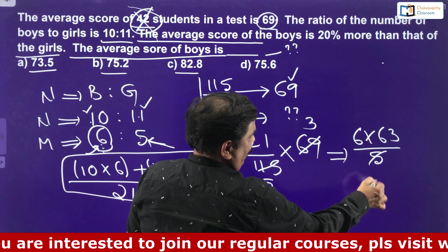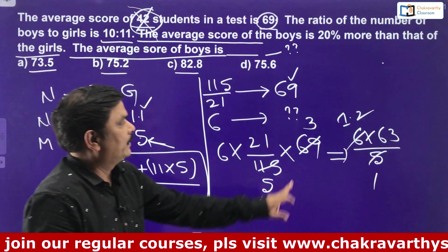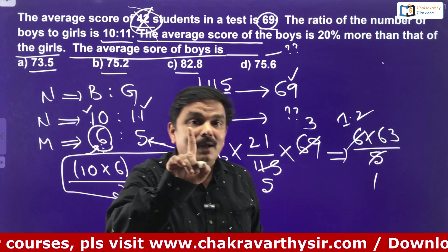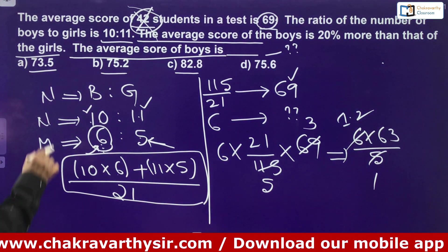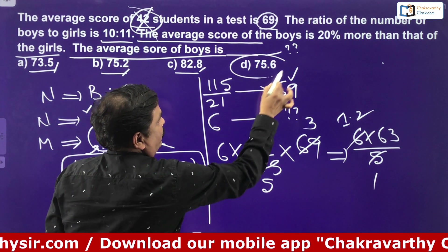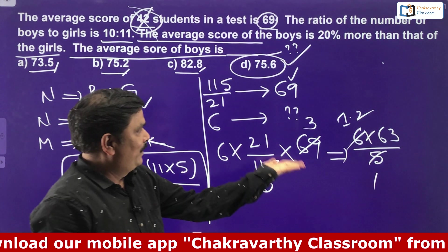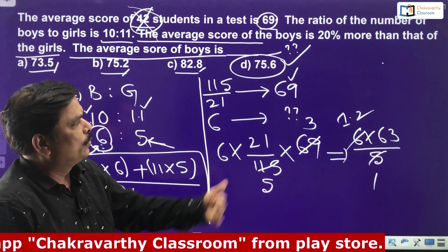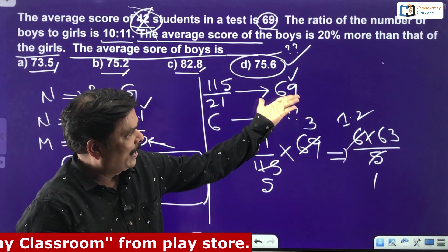So my final answer is 63 into 1.2. What is 63 into 1.2? Start with unit digit multiplication: 2 times 3 is 6. Out of the given options, look at the unit digits: it's 5, it's 2, it's 8 — none of those. So 75.6 must be my option. And you can verify: 63 into 1 is 63; 63 into 0.2 — that is 63 into 2 is 126, meaning 12.6 — so 63 plus 12.6 is 75.6. The answer is 75.6.